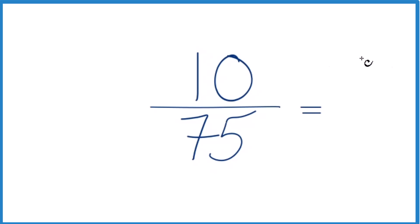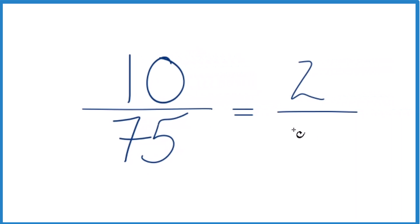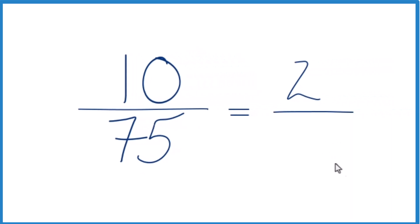10 divided by 5, that's 2. And 75 divided by 5, that is 15.